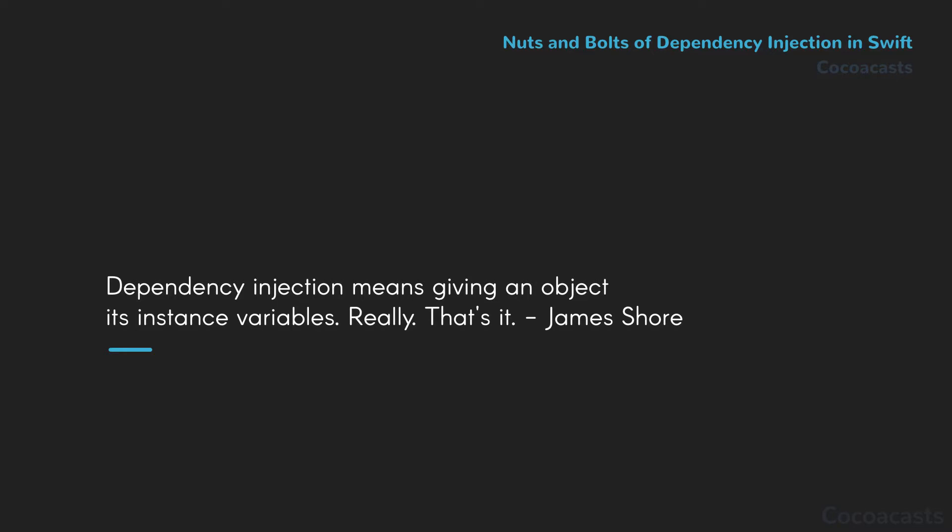For developers new to dependency injection, it's important to learn the basics before relying on a framework or library. Start simple — chances are that you already use dependency injection without realizing it. Dependency injection is nothing more than injecting dependencies into an object instead of tasking the object with the responsibility of creating its dependencies, or as James Shore puts it, you give an object its instance variables.